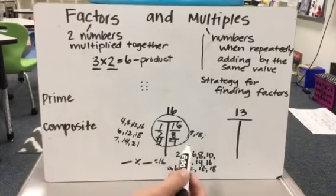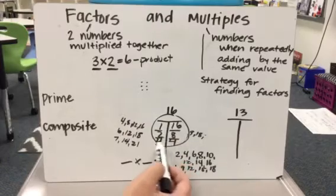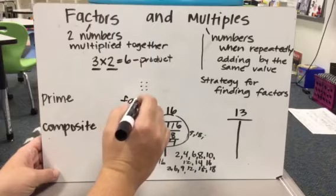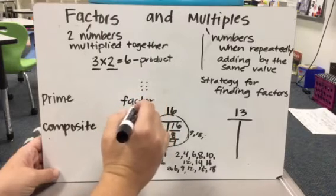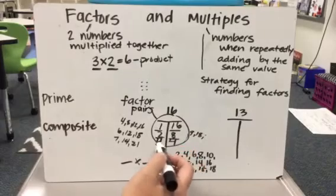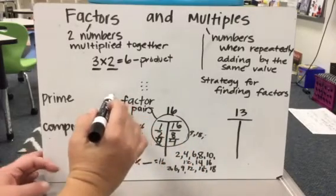Or it has 3 factor pairs. These are called factor pairs. There are 5 factors because 4 is a double. 3 factor pairs.